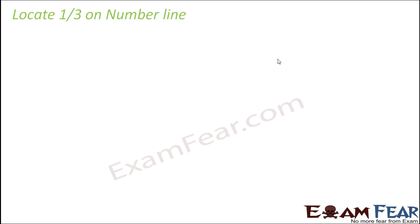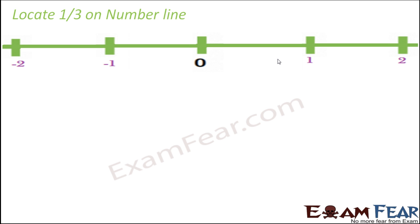So what is the meaning of 1 by 3? It means 1 part out of 3 equal parts. So let us say this is the number line — this is a magnified version of the number line. I am not showing the entire number line, instead just showing the central part, a little magnified so that it becomes easier to understand. Now the technique you need to follow to locate a fraction on a number line is to observe the denominator. So what is the denominator here? You have 1 by 3, so the denominator is 3.